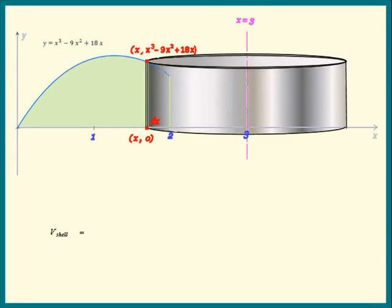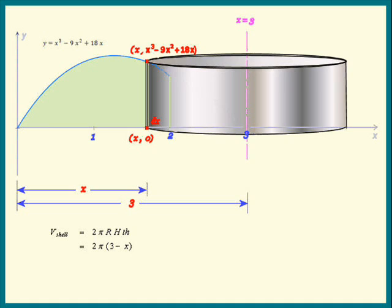Once again, the volume of the shell is 2 pi radius times its height times its thickness. Can you figure out what the radius is? I'll let you think about that. Good job. It's 3 minus x.